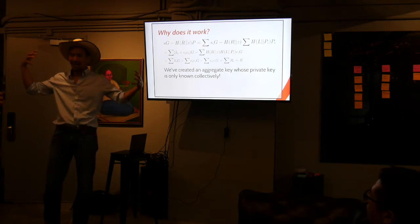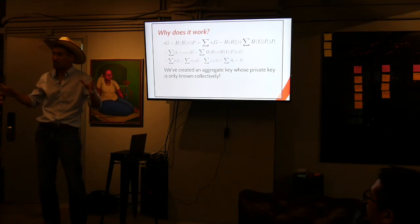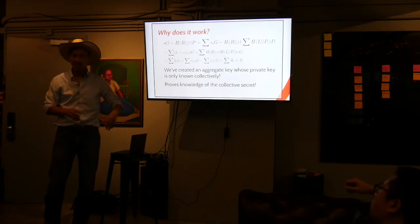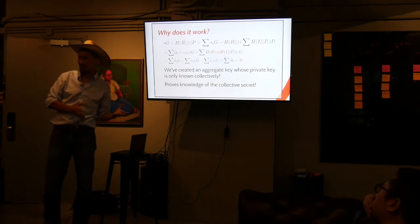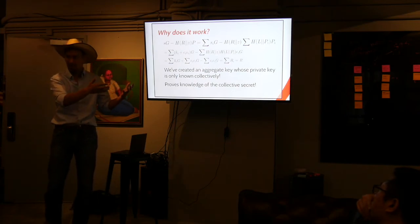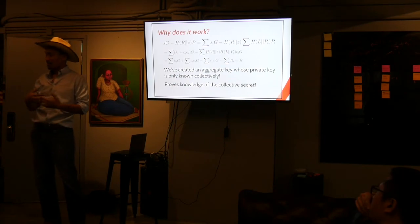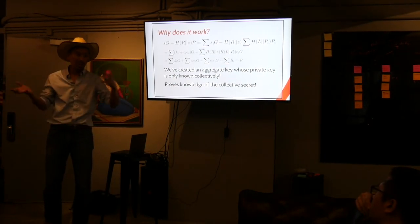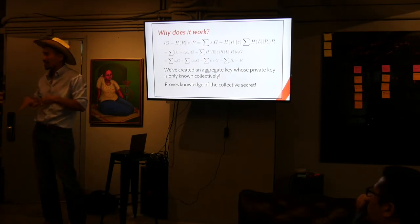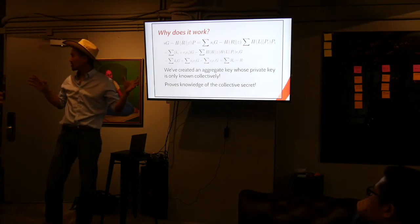It kind of looks like sleight of hand, but we've created an aggregate key where you can't make a signature unless you all cooperate, right? Which is kind of amazing. You have this aggregated signature that you can't create, that no individual can create. And really it proves the knowledge of the collective secret, which is kind of a really cool concept. But that's the whole idea behind Musig, is that you not only aggregate the signature, but you're aggregating the pub key. So you have no idea like who signed it or how it was combined or whatever. So anyway, any questions on this?